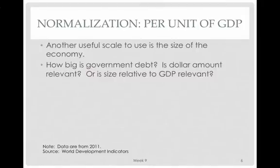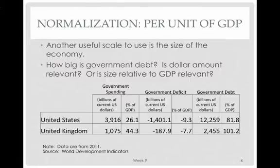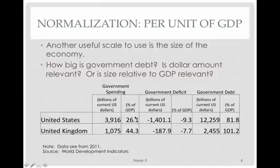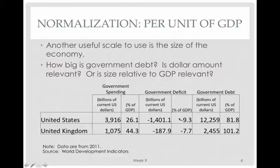Another way to normalize is per unit of GDP. How big is government debt — is the dollar amount relevant, or is size relative to GDP the relevant measure? Looking at an example with the United States and the United Kingdom: when we look at government spending, you can see the United States is way outspending the United Kingdom — this was from 2011. But when we look at it as a share of GDP, the United States government is actually much smaller than the UK's. The deficit tells a similar story: $1,401 billion for the US compared to Great Britain's $187 billion, but as a percent of GDP it's still larger but not by very much.